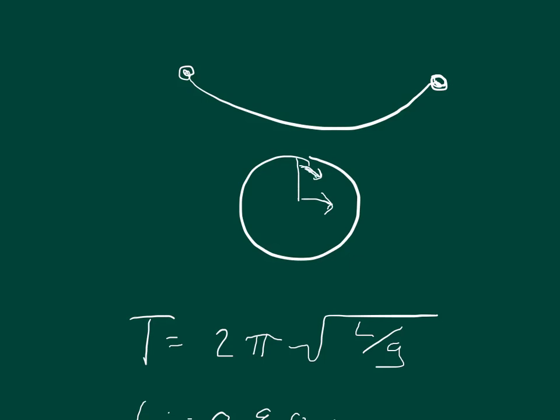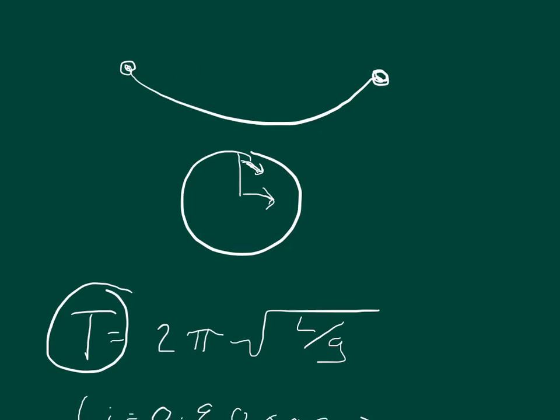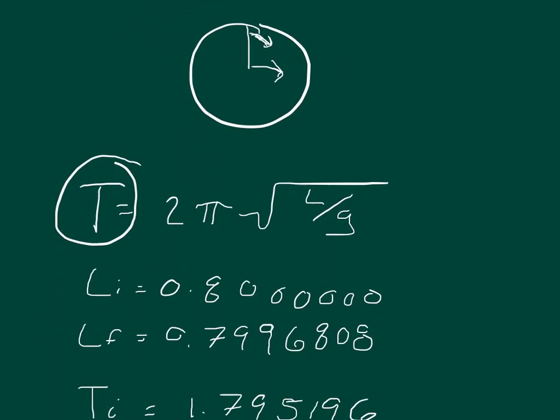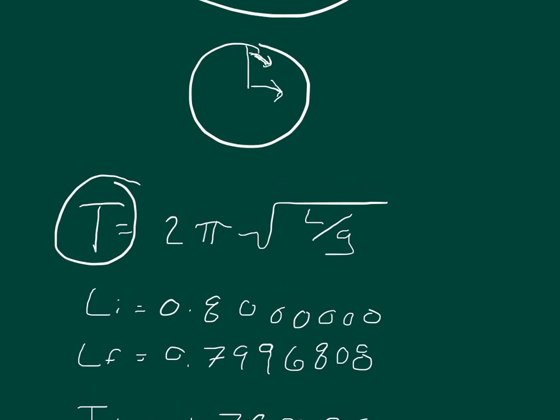And so we want to know how long does it take for the second hand to move. It should take about one second. And so whenever we look at our initial length and our final length, so the initial length we said, we need to make sure first of all that this is in meters because gravity is given in meters per second.